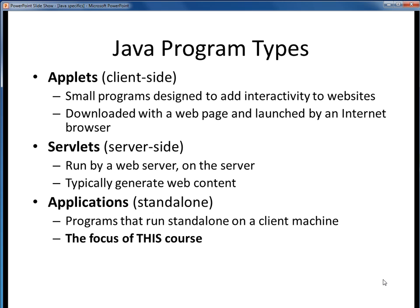Although we won't be concerned with these distinctions in this course, there are three different Java program types. Java applets are small client-side programs which can add interactive features to websites. When we view an HTML web page with an applet embedded in it, that applet is executed locally on the client machine by its browser. Java servlets, by contrast, are run on the web server side, typically to generate some sort of web content. Java applications, which will be the focus of our efforts in this course, are standalone programs which run on our own individual development machines using the JGRASp IDE. So here we just want to let you know that these other Java program types exist.